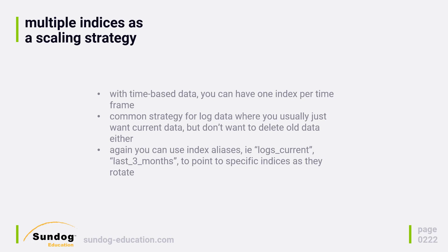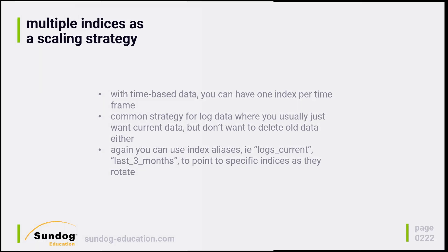You can manage that using index aliases. If you have log data split up into separate indices for each day, you could maintain an alias called logs_current that points to the most current day or month of indices. Or you could have another one called last_three_months that points to all the indices encompassing log data from the past three months. As new indices get created for new days of data, you would update those aliases to point to different specific indices for the dates you want.